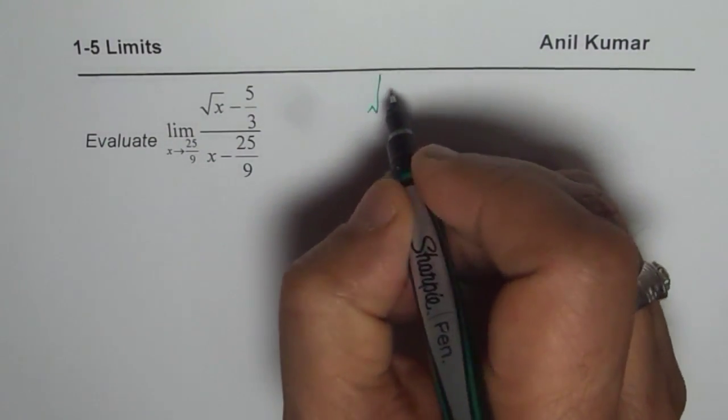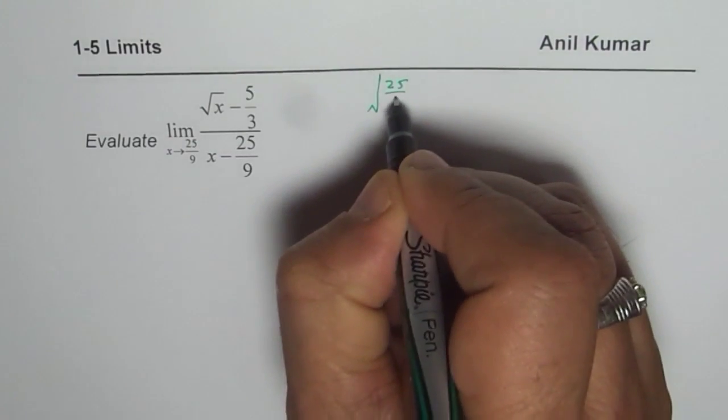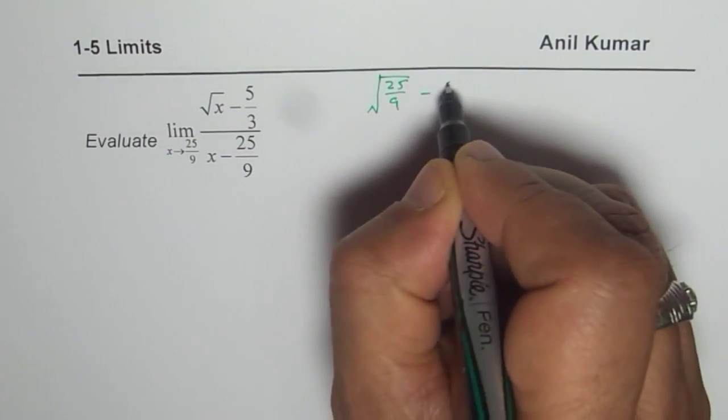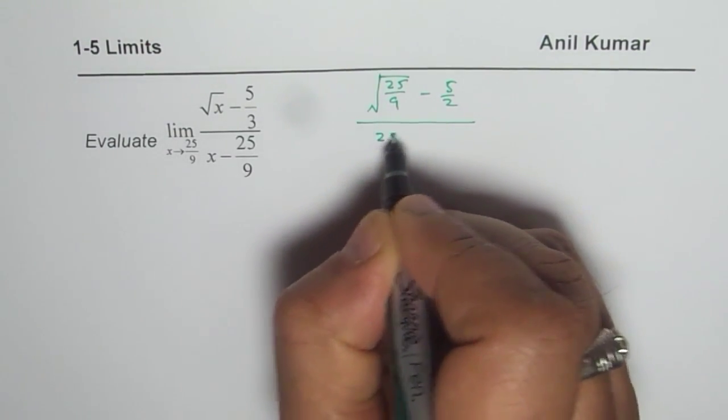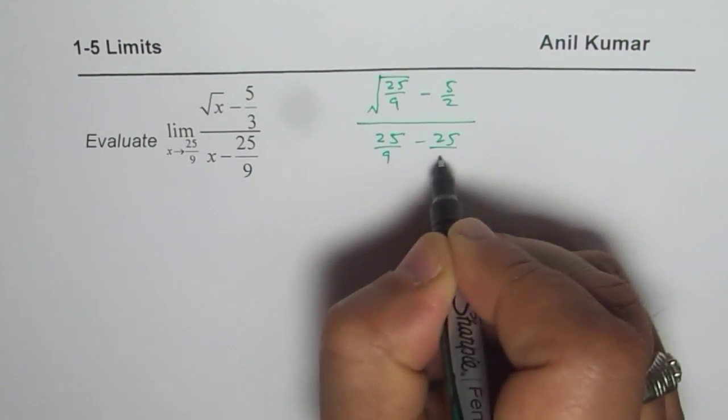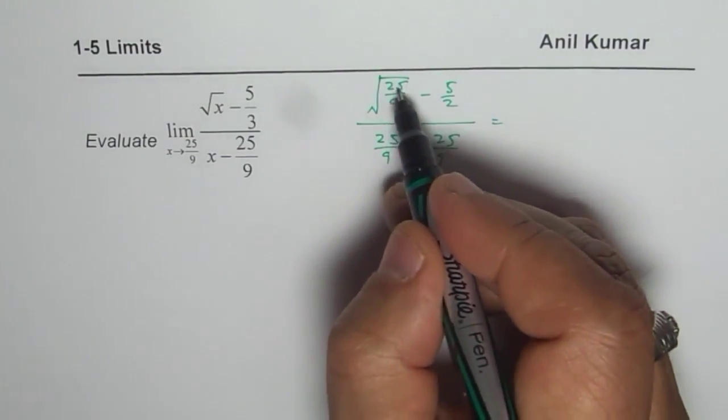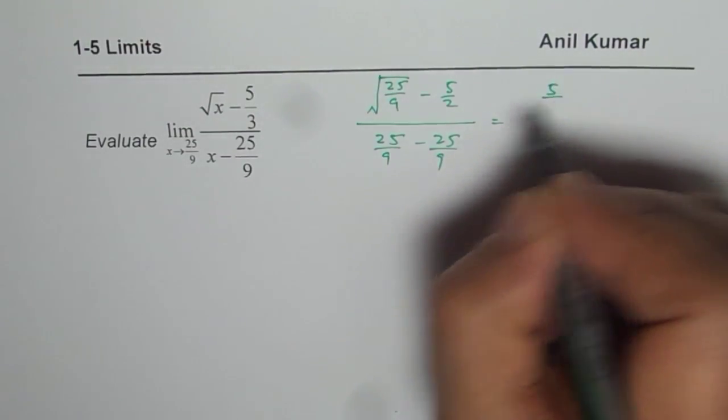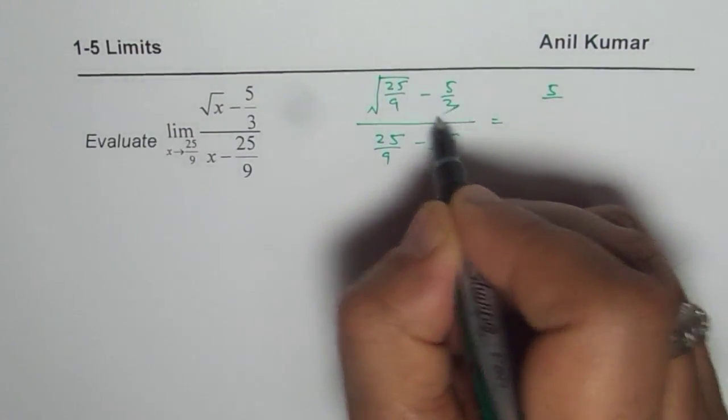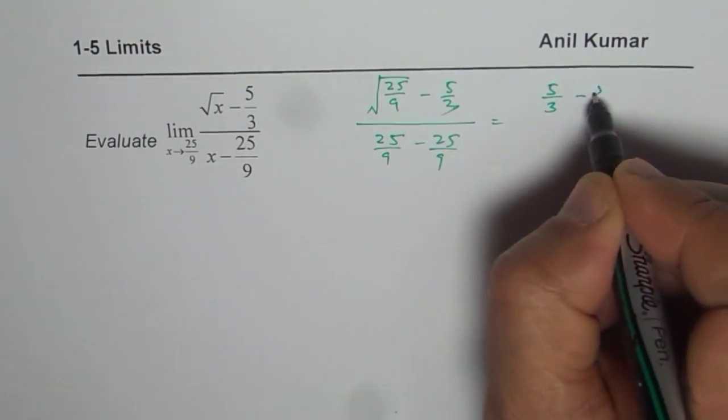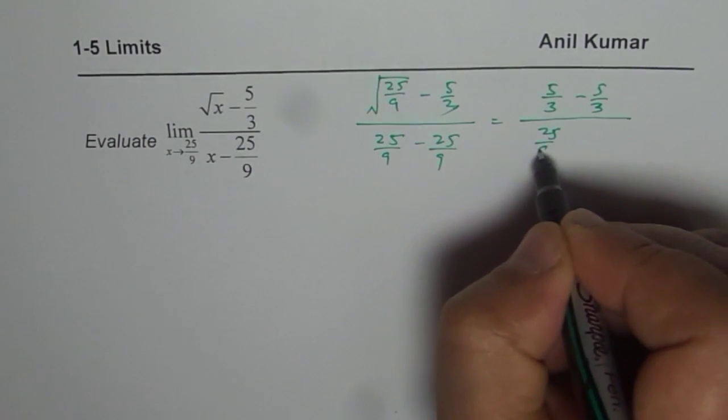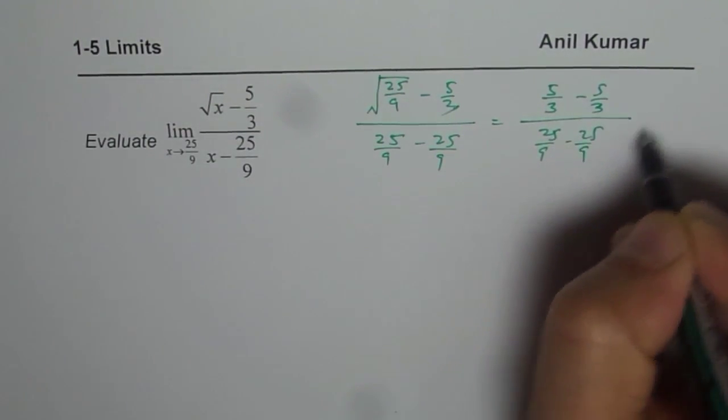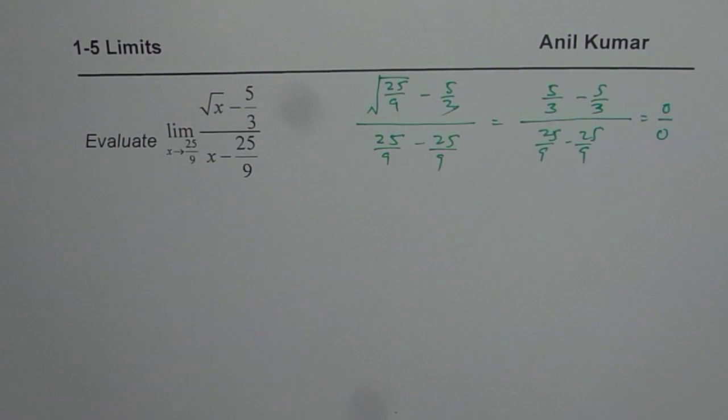I get square root of 25 over 9 minus 5 over 3 divided by 25 over 9 minus 25 over 9. And square root of 25 is 5, square root of 9 is 3. 5 over 3 minus 5 over 3 divided by 25 over 9 minus 25 over 9, which gives us 0 over 0.